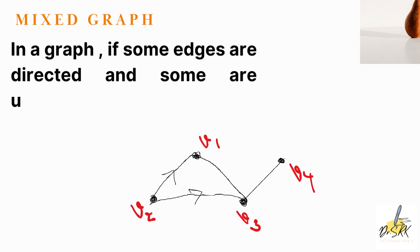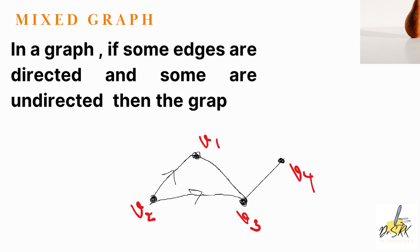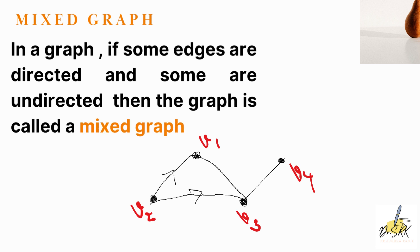What is a mixed graph? In a graph, if some edges are directed and some edges are undirected, then the graph is called a mixed graph. Looking at the diagram, some edges are directed by means of arrow marks and some edges are undirected without arrow marks. Here V1 to V2 and V2 to V3 are edges with arrow marks, while V1–V3 and V3–V4 are edges without arrow marks. Such a graph is called a mixed graph.